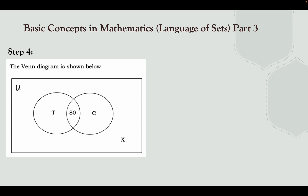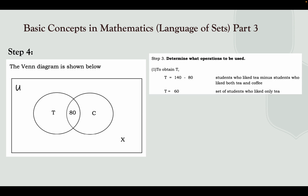When you draw a Venn diagram, you make a square — that is your universal set — and then you make two circles that intersect. Since 80 students liked both tea and coffee, you will put 80 in the intersection, in the side where the tea and coffee circles intersect. To obtain the tea-only count, we subtract: 140 students liked tea, so we subtract the 80 students who liked both tea and coffee. So 140 minus 80.